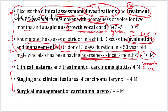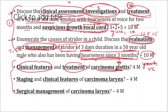Coming to the short questions: clinical features and treatment of carcinoma glottis — again focusing on glottis. The first question clearly mentions a growth on the vocal cord, the second also gives an indication of carcinoma glottis, and the third again is carcinoma glottis. Why? Because carcinoma glottis is more common, and most examiners are also focused mostly on carcinoma glottis when they ask about carcinoma larynx.